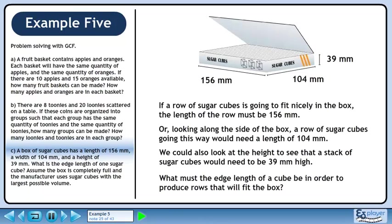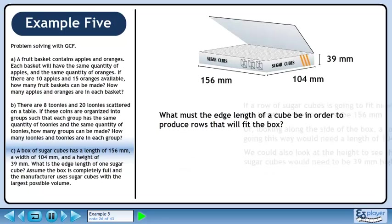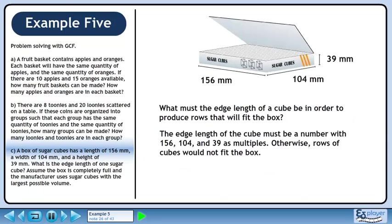What must the edge length of a cube be in order to produce rows that will fit the box? Well, the edge length of the cube must be a number with 156, 104, and 39 as multiples. Otherwise, rows of cubes would not fit the box. We can find this number by determining the GCF of the box dimensions.